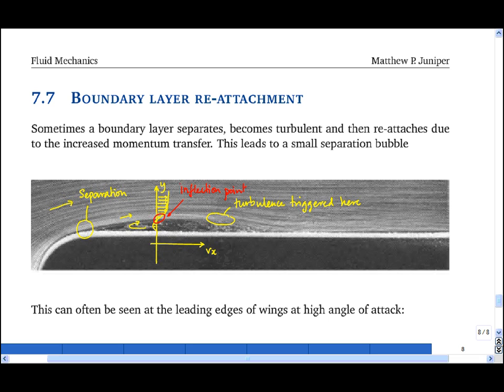Once that happens, there is much greater momentum transfer from the free stream, and that makes the boundary layer reattach around here. And so now, instead of having a detached boundary layer over the entire surface of this body, we just have what is known as a leading edge bubble.